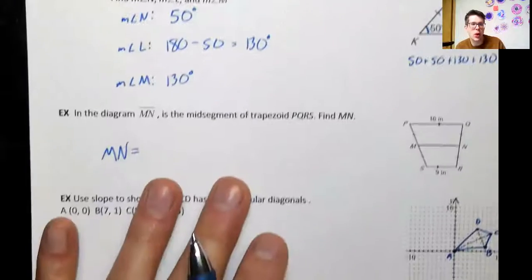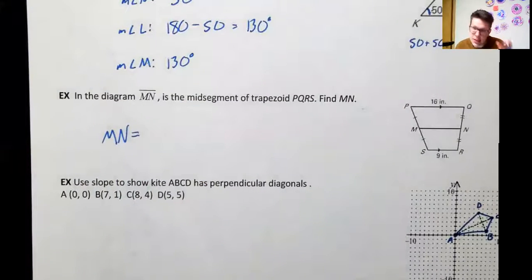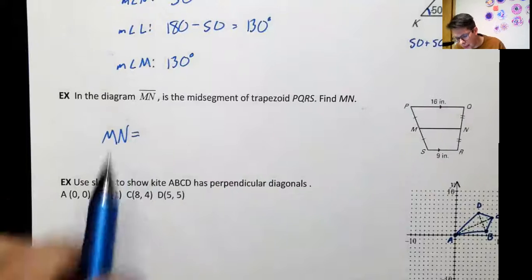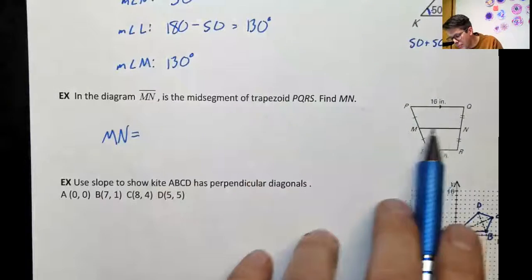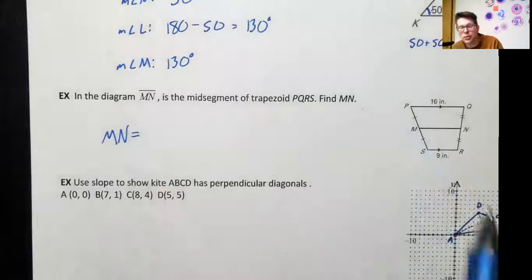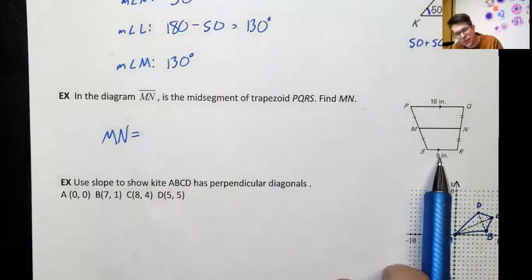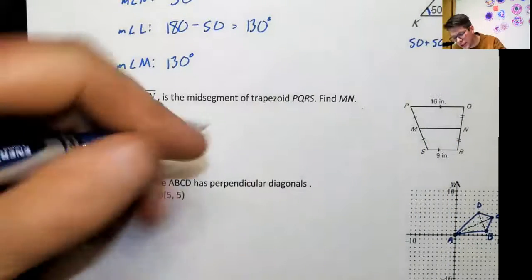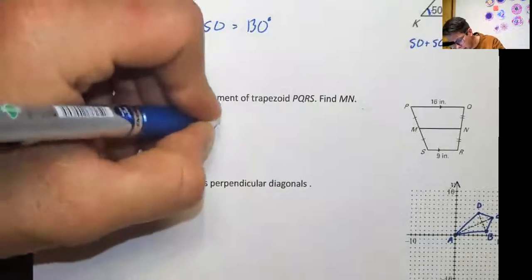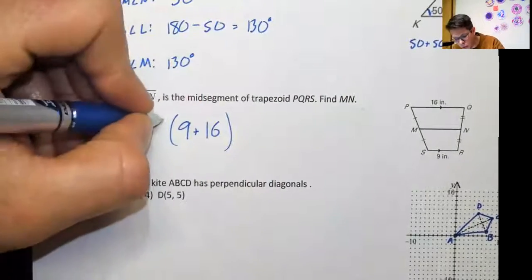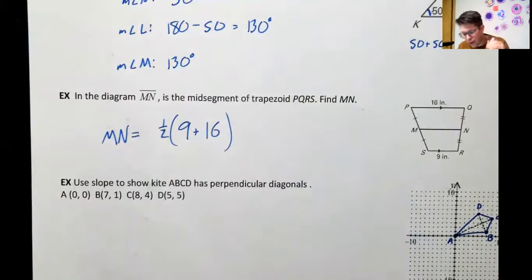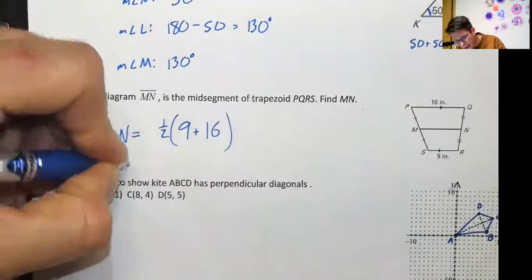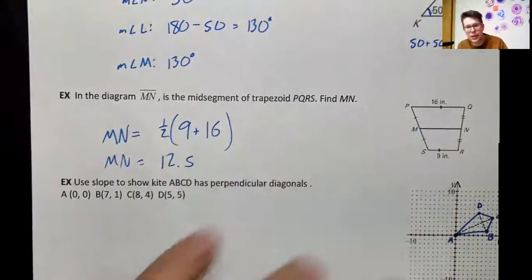Next is the mid-segment question — probably the most intense math of today's lesson. We need to find the length MN. Our mid-segment connects from one midpoint to the other, and we want a medium length: 9 inches is too short, 16 is too long. So we add them: (9 + 16) / 2. That gives us MN = 12.5 inches.